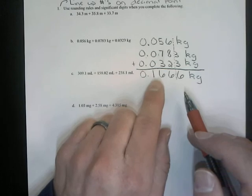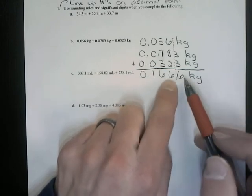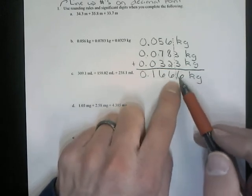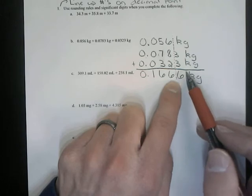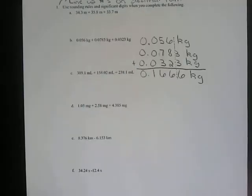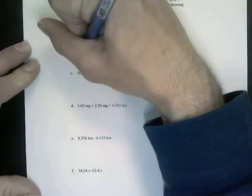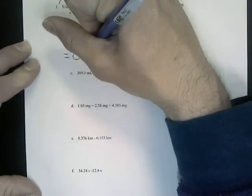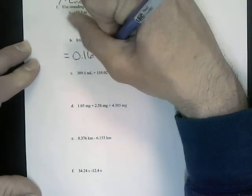So our number is going to be 0.166, and then we look at this number to the right of my red line, and we ask ourselves, does a 6 make a number round up? Well, yes. So our answer here is 0.167 kilograms.